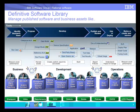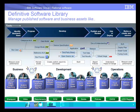So let's look at the new capabilities in RAM in a scenario you would likely face yourselves. As part of managing your assets, you probably want to establish a definitive software library. In today's demonstration, I'm going to show you some of the new capabilities in RAM for managing just a couple of these assets — perhaps third-party binaries as well as business cases — and how we can manage those in RAM as a definitive software library.